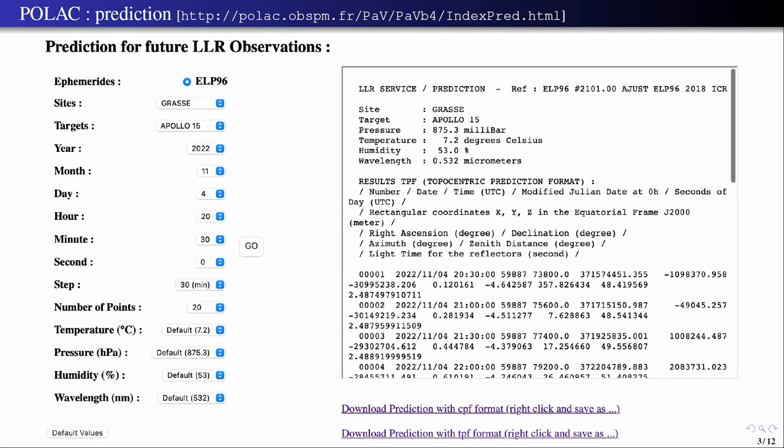The two tools that we provide for observers are the prediction tools. So if you are a station and you want to observe one retro-reflector, you can go on this website, you put here the name of the station, the name of the target that you want to observe, the date of observation, and you click on go. You would obtain the CPF files or also a more precise file that takes into account all the corrections like the CPF file at the level of the station.